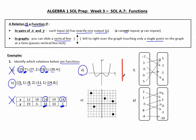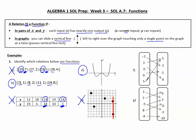But in E, notice when I take the vertical line — here it only touches a point, here it only touches a point, here it only touches one point — but here it touches two points. That is not a function, because this x value of 4 goes with two different y values; the x is repeating. In example F, I notice that each of these x values goes only to one y value. Therefore, this is a function.